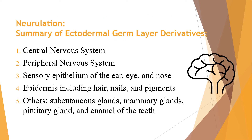For the summary of ectodermal germ layer derivatives, we have the central nervous system, peripheral nervous system, and sensory epithelium of the ear, eye, and nose. We also have the epidermis including hair, nails, and pigments. Others include the subcutaneous glands, mammary glands, pituitary gland, and the enamel of the teeth.